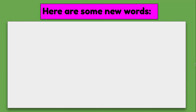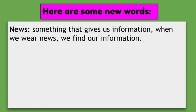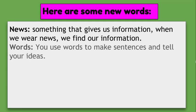Here are some new words I'm going to go over and explain, and then we will use them in context in sentences. News is something that gives us information — when we hear news, we find our information from that. You can think of MSNBC or CNN; those are both news outlets in the United States. Words: you use words to make sentences and tell your ideas. Words can be spoken, written, or seen.